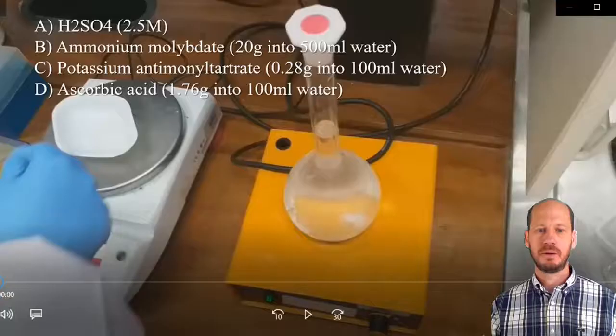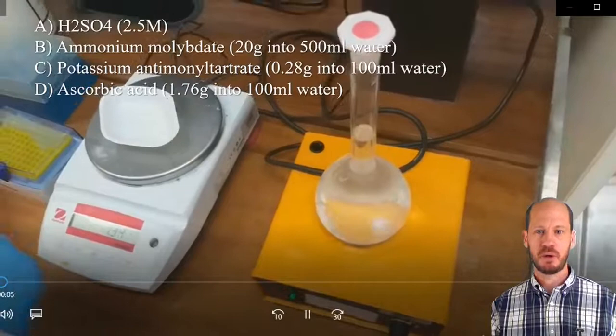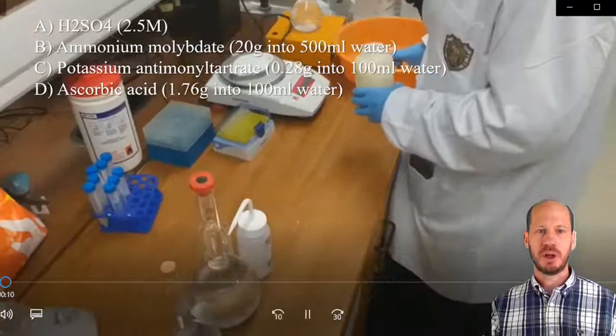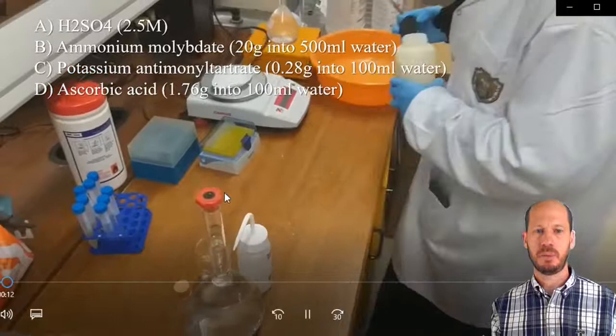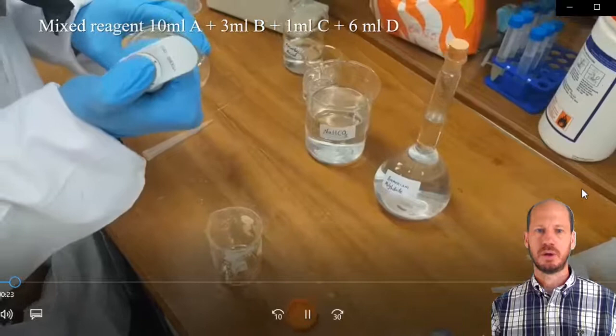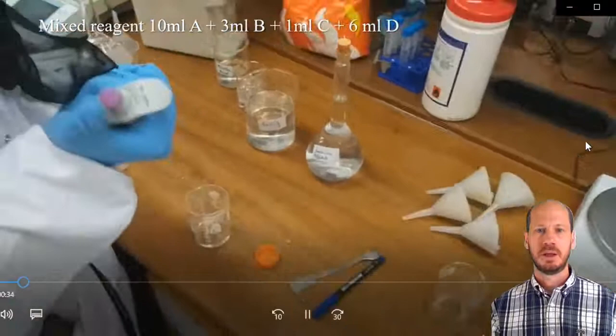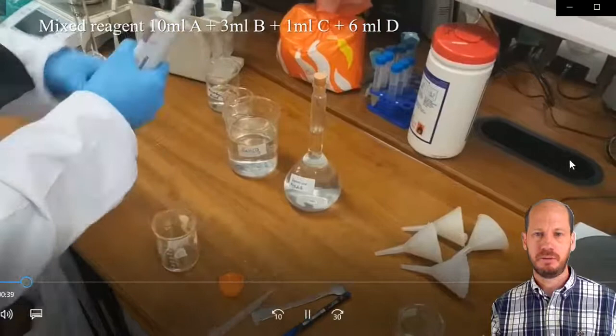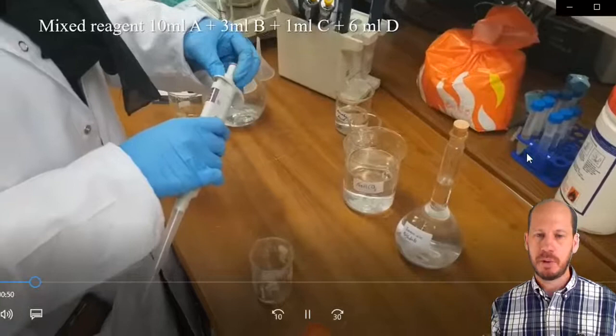First step is to prepare the four solutions for color development. The first is sulfuric acid. The second is ammonium molybdate. The third is potassium antimonyl tartrate. And the fourth is ascorbic acid. Once you prepare these four solutions, you prepare a mixed reagent containing 10 ml of solution A, 3 ml of solution B, 1 ml of solution C, and 6 ml of solution D. The ascorbic acid, solution D, has to be prepared on the day.